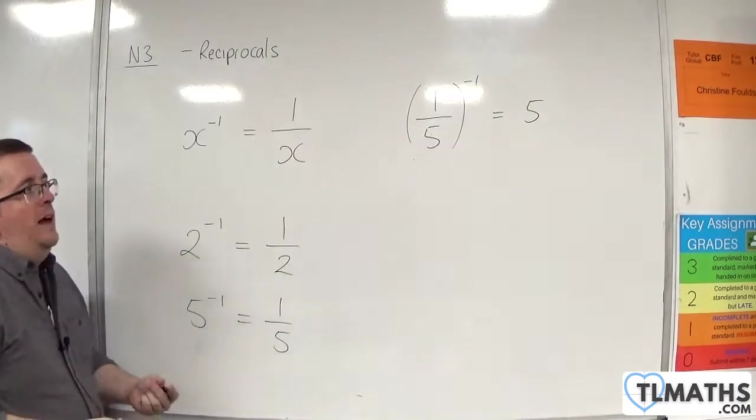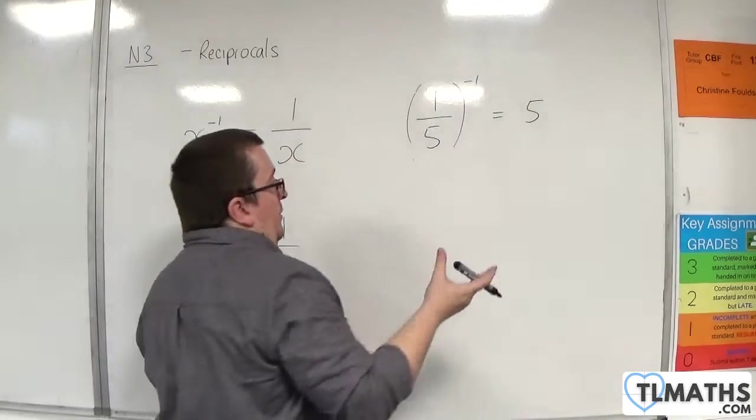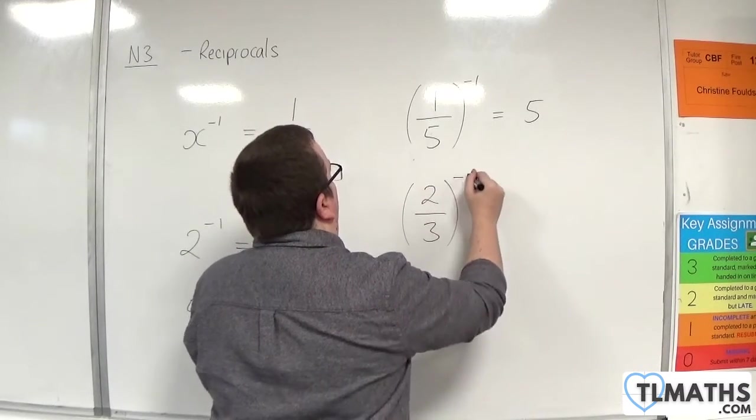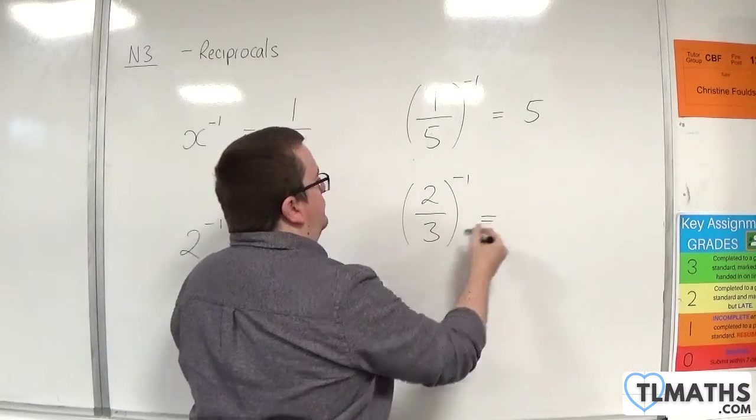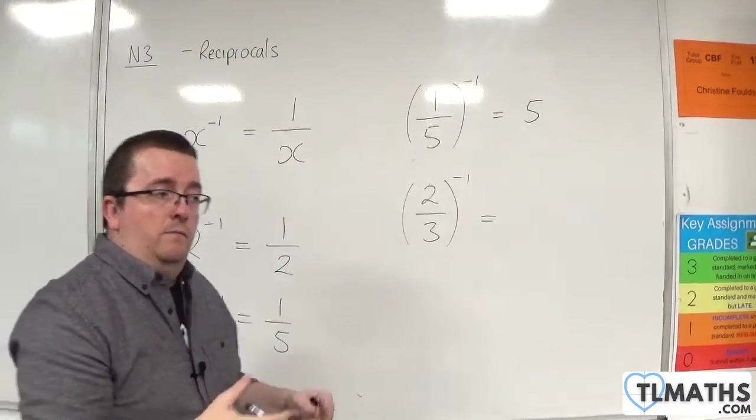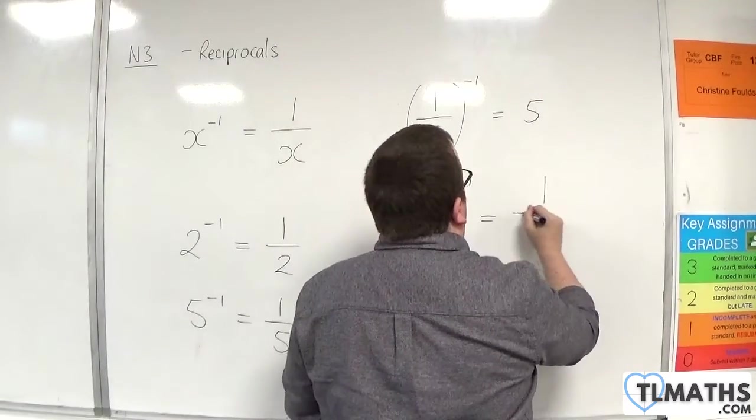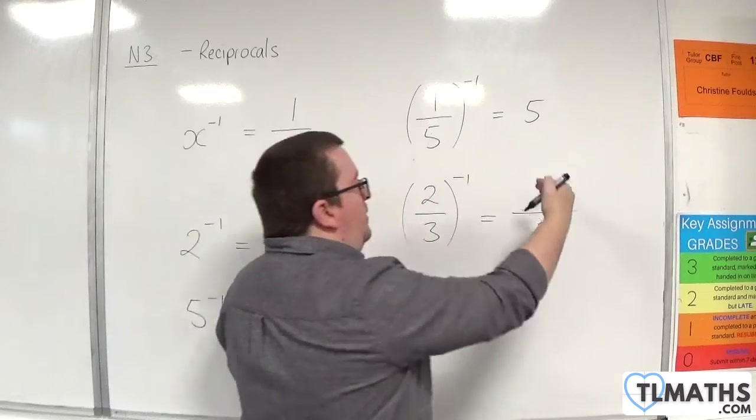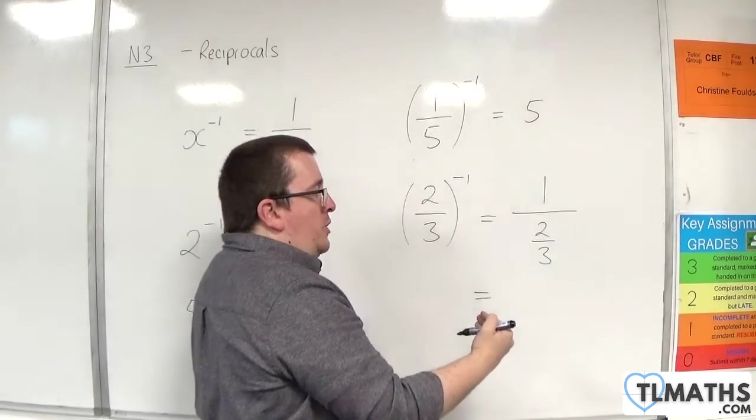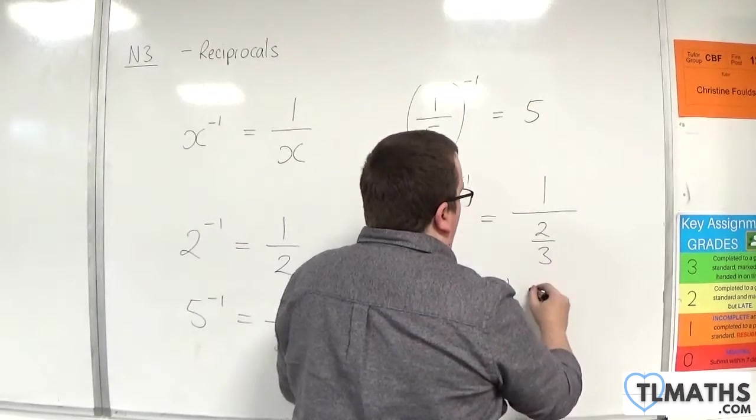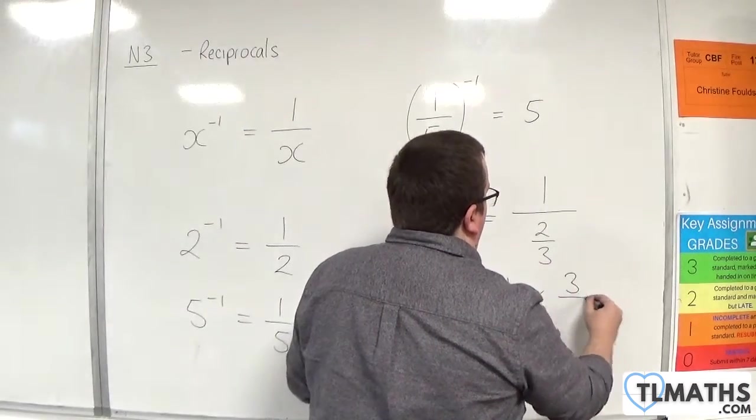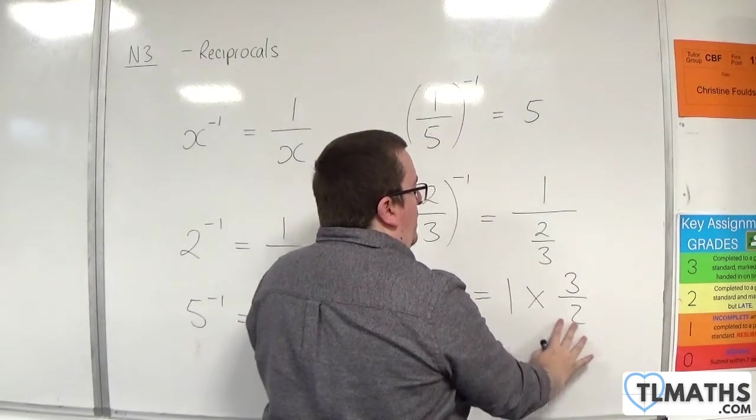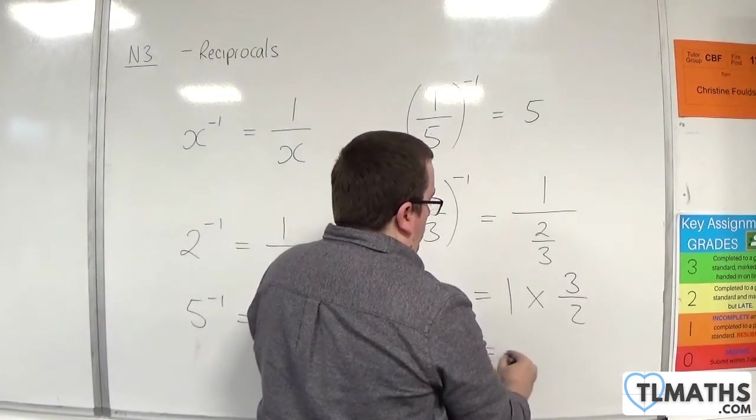If you do that with something like 2 thirds, so 2 thirds to the minus 1, then it's doing the same thing. We're doing 1 over 2 thirds. We know that dividing by a fraction is the same as multiplying by the reciprocal. So 1 divided by 2 thirds is the same as 1 times 3 halves, which is 3 halves.